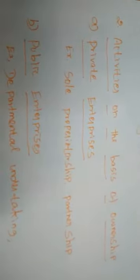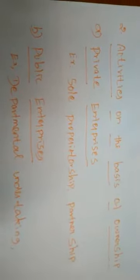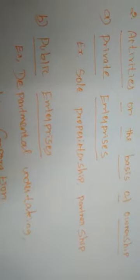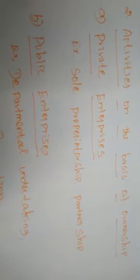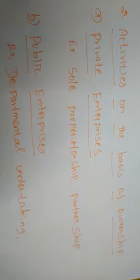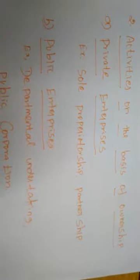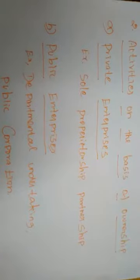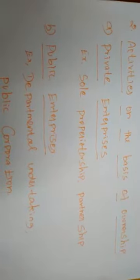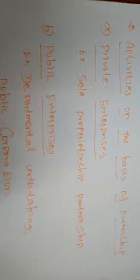Next, Business Activities on the Basis of Ownership. The first one is Private Enterprises. This type of enterprise is run with the help of individual people. Some enterprises are called Private Enterprises where they are owned, managed, and controlled by some persons rather than the government. Here all business decisions are undertaken by single individual persons — the sole proprietors. All enterprises are owned, managed, and controlled by a single person.